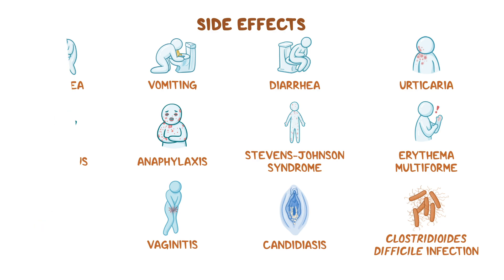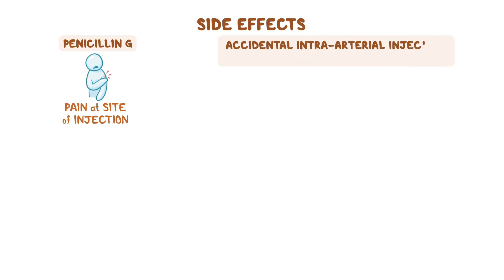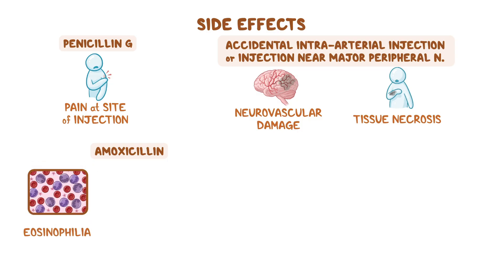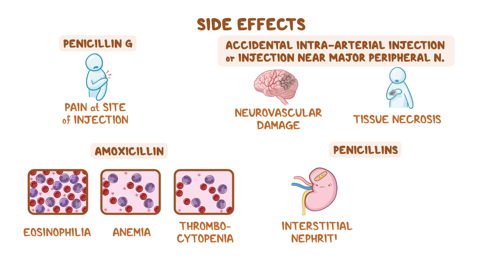More specifically, a frequent side effect of penicillin G is pain at the site of injection. Accidental intra-arterial injection or injection near a major peripheral nerve can result in severe neurovascular damage and tissue necrosis. Amoxicillin can cause eosinophilia, anemia, and thrombocytopenia. Finally, some penicillins can cause interstitial nephritis and renal tubular damage.